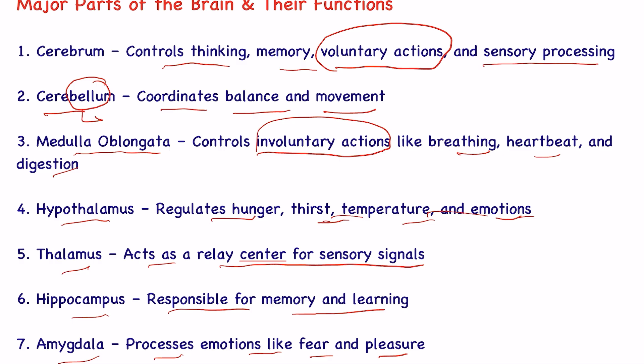Cerebellum has 'bell' in it — we can relate 'bell' with balance. So whenever it is asked which part of the brain regulates balance, it is cerebellum. It coordinates balance and movement. If cerebellum coordinates balance and movement, then cerebrum controls voluntary actions, thinking, memory, etc.